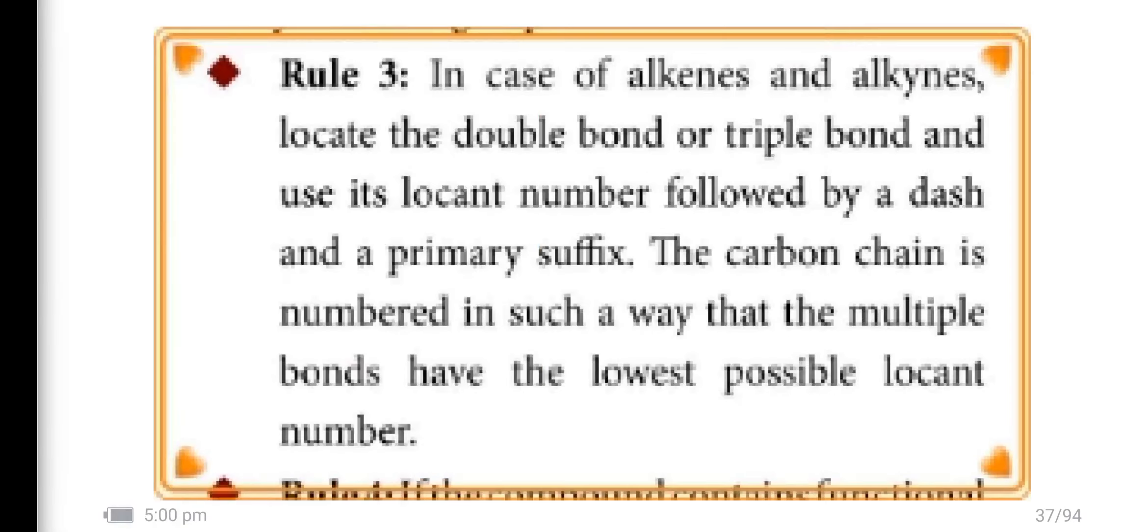Rule 3 - In the case of alkene and alkyne, locate the double bond or triple bond and use its locant number followed by a dash and a primary suffix. The carbon chain is numbered in such a way that the multiple bond has the lowest possible locant number.